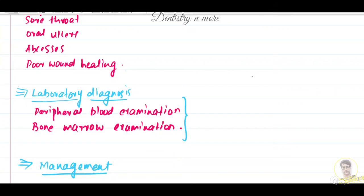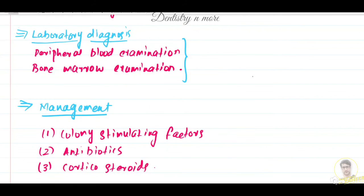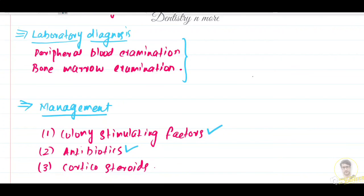In blood examination, there will be acute neutropenia. Regarding management, the first approach is colony-stimulating factors — growth factors such as granulocyte colony-stimulating factor (G-CSF), granulocyte-macrophage colony-stimulating factor (GM-CSF), and erythropoietin can be effective in increasing neutrophil production. A combination of broad-spectrum antibiotics is usually administered in cases of viral and bacterial infection. Corticosteroids may be used if the cause is an immunological disorder.